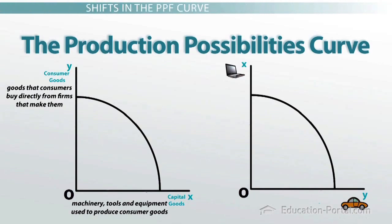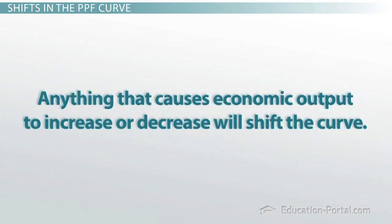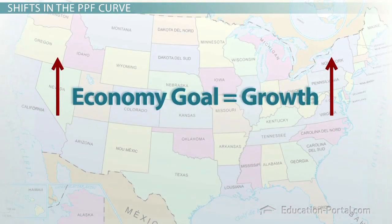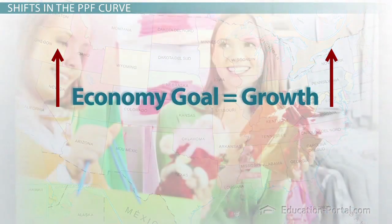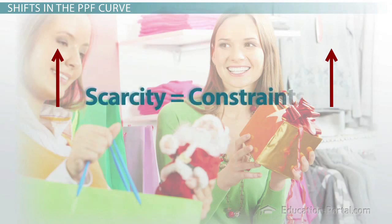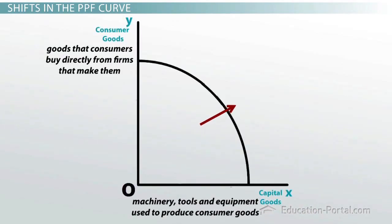So now we can talk about shifts in the entire curve. The basic idea is that anything that causes economic output to increase or decrease will shift this curve. In any economy, the major goal is growth — producing increasing amounts of the goods and services that consumers demand. Given the fact that resources are scarce, we have constraints, which is what the curve shows us. When the economy grows and all other things remain constant, we can produce more, so this will cause a shift in the production possibilities curve outward, or to the right. If the economy were to shrink, then the curve would shift to the left.